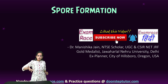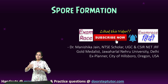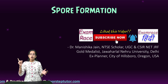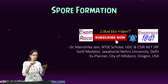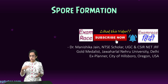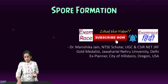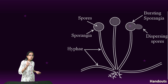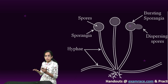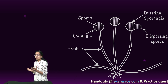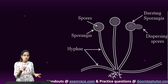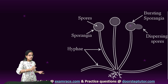Let's focus on spore formation. This is a method of reproduction similar to other methods — fission, fragmentation, budding, and vegetative reproduction that we have understood in various classes. Spore formation is a common process that we see on bread, where we have bread mold.